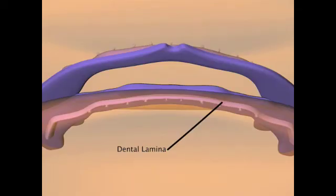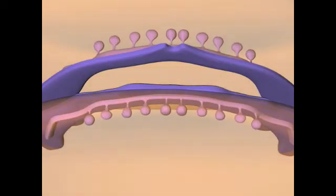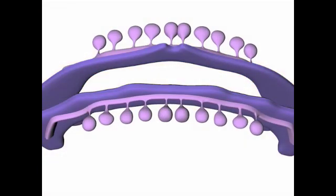The bud stage commences with the formation of small bulges on the dental lamina. These bulges grow into the adjacent ectomesenchymal tissue, creating a bud.